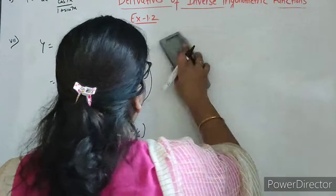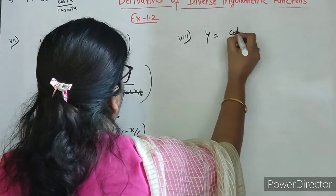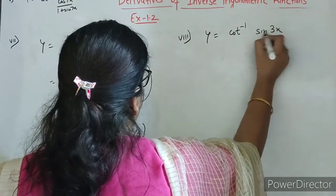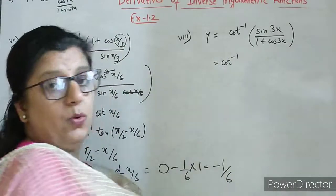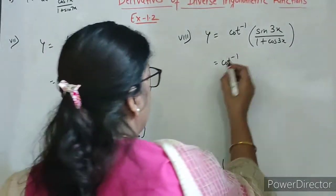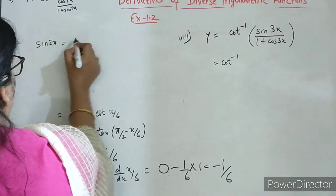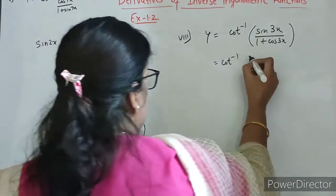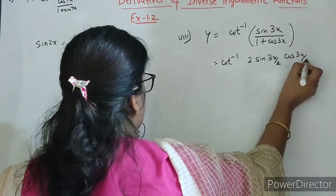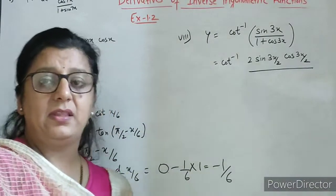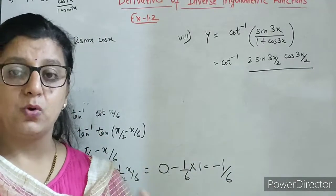Now we will start question number 7, 8th part. y equals to cot inverse of sin 3x upon 1 plus cos 3x. Now use here the formula sin 3x. Sin 2x ka formula kya hota hai? 2 sin x cos x. So sin 3x ka formula kya ho jayega? 2 sin 3x by 2 cos 3x by 2. Yahan par agar hum sin 3x aur cos 3x ka formula 3 sin x minus 4 sin cube x use karenge, simplify ho kar kuch nahi milega.